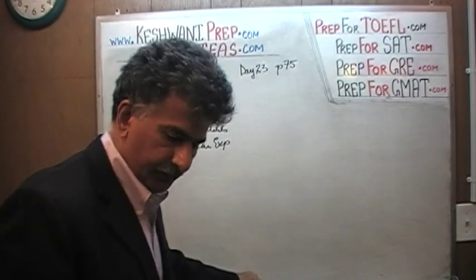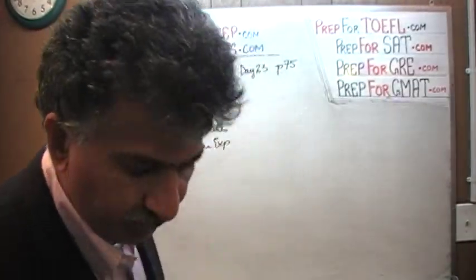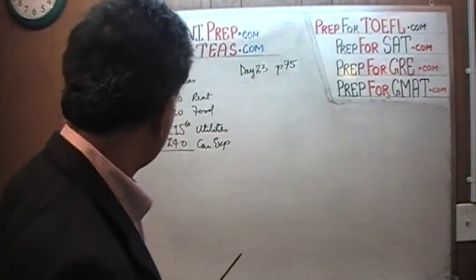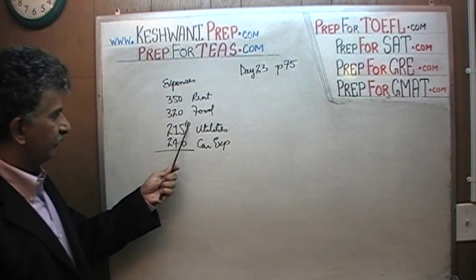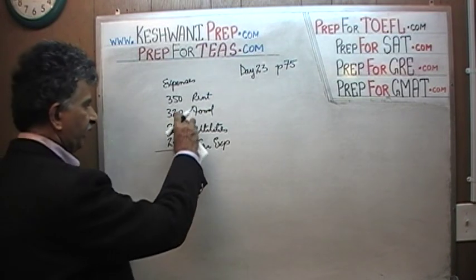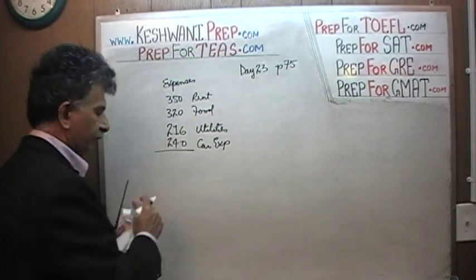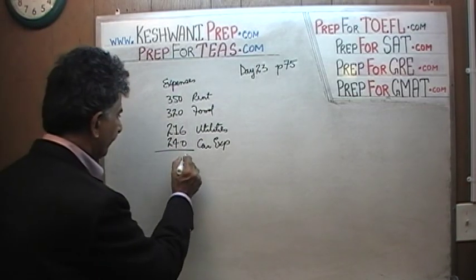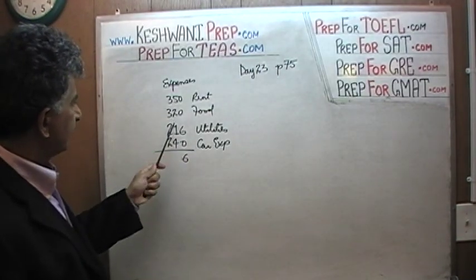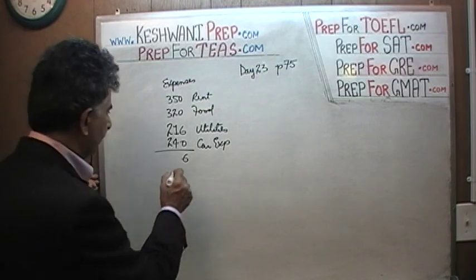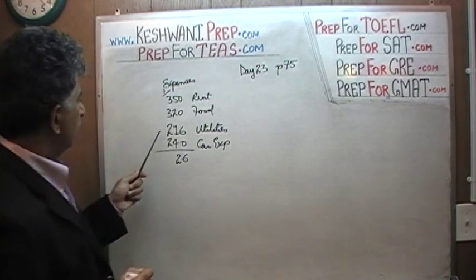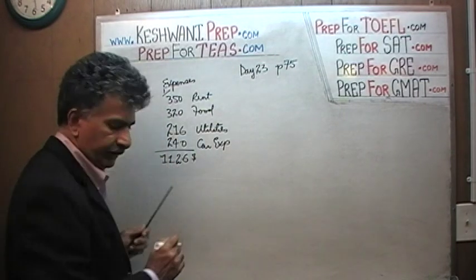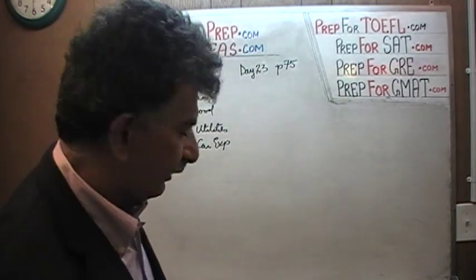Let's see what it adds up to. As always, we are not going to waste our time dealing with nickels and dimes. We are going to round things up and down — if it's more than 50 cents, we round up; if it's less than 50 cents, we round down. Adding the columns: 6, carry 1; 2 plus 5 is 7, 7 plus 1 is 8, 8 plus 4 is 12, carry 1; 2 plus 2 is 4, 4 plus 6 is 10, 11. The total expenses for this person is $1,126.